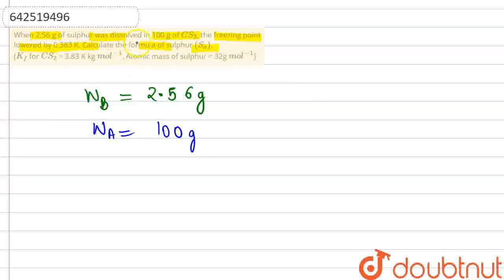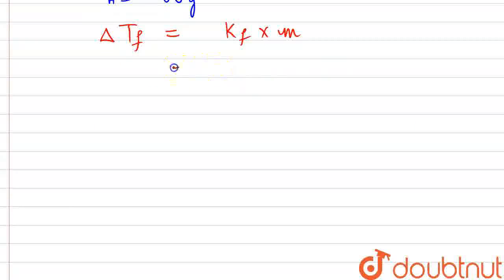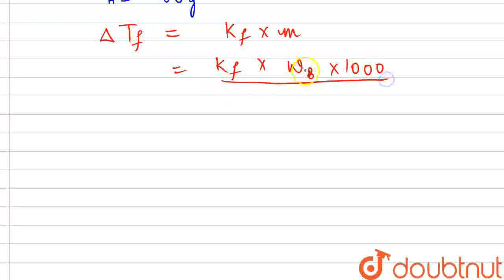Apart from that, if we basically use the expression of the depression in freezing point, that is given as Kf into molality. Now writing the formula or expression of molality, this will become Wb into 1000, the weight of the solute multiplied by 1000 for the respective units, divided by molecular mass of B, this is sulfur, multiplied by the weight of the solvent that we are having here as carbon disulfide as Wa.